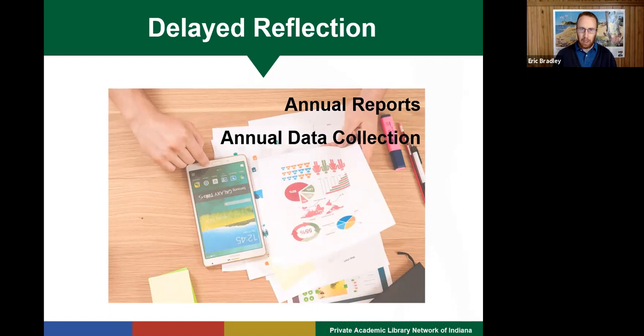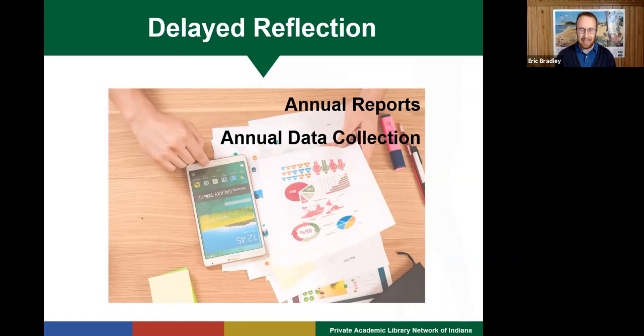Now I want to talk about a different type of delayed reflection — the infamous annual reports. So many of us have to write annual reports for our supervisors. Many of these reports are never read, and if so, only in times of institutional crisis. But if you have to write one, it's important to capitalize on the opportunity. As I like to say, don't let a good crisis go to waste. Consider at the beginning of compiling data and writing goals, whether or not they appear in the report, looking through the lens of the Gibbs model that we looked at earlier.